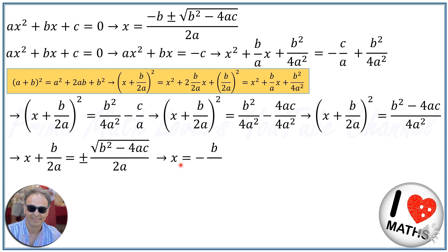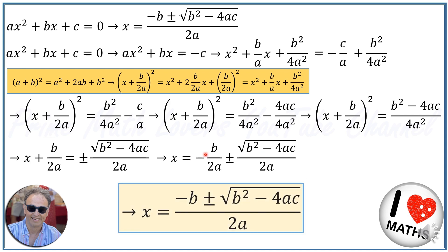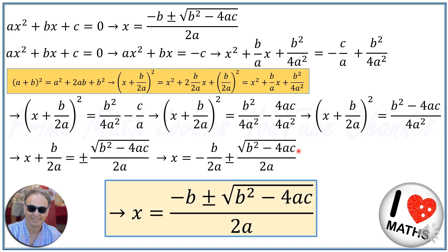I will have x is equal to minus b over 2a plus or minus the square root of b squared minus 4ac over 2a. Combining them, and voilà, we get the Delta formula: x is equal to minus b plus or minus the square root of b squared minus 4ac, all over 2a.